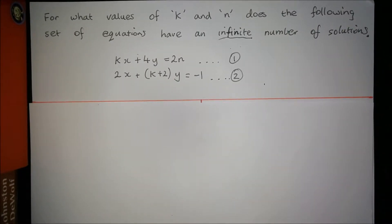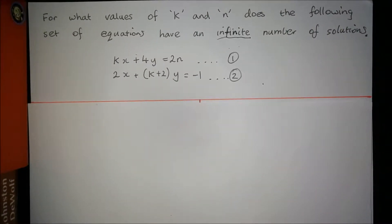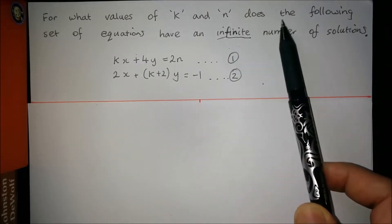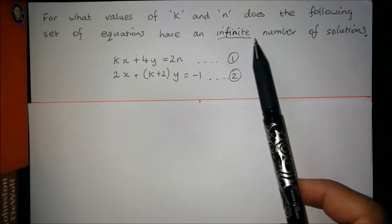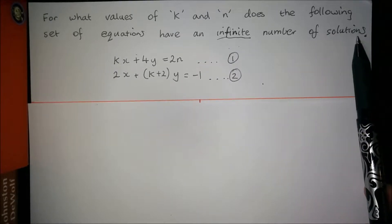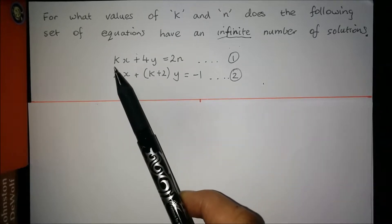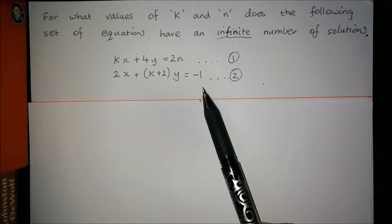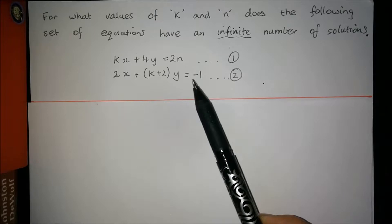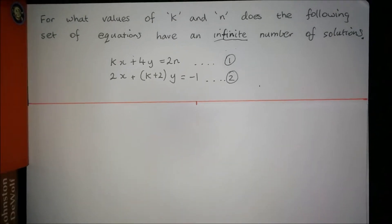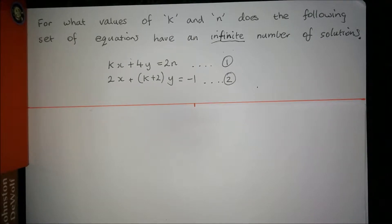Okay, here's our question. Have a read of it. The question is, what values of k and n does the following set of equations have an infinite number of solutions? We have two equations here, and you can see by looking at them that they're both linear equations. There are no squares or cubes or square roots or log functions or anything like that, so we know that these two are linear equations.